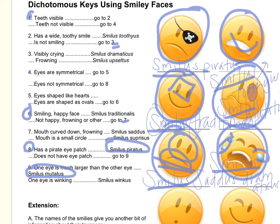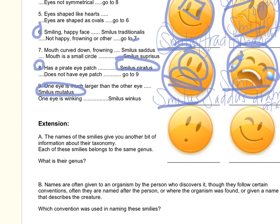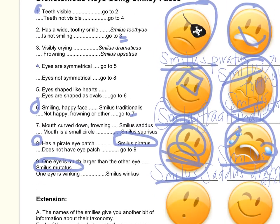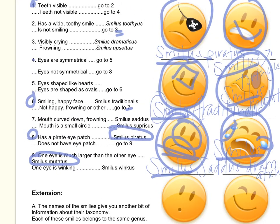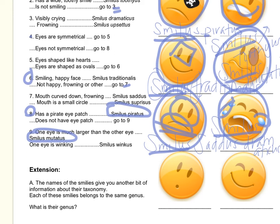Two more. Teeth visible? No — go to four. Eyes are symmetrical? Yes — go to five. Eyes are shaped like hearts? No. Eyes are shaped like ovals — go to six. Smiling happy face? Nope. Not happy, frowning, or other? Yes, that's definitely an other. Go to seven. Mouth curved down frowning? Nope. Mouth is a small circle — yes, definitely. So that is Smilus surprises.